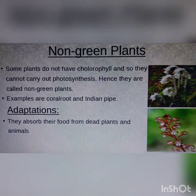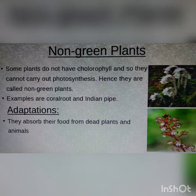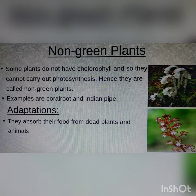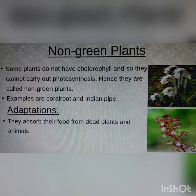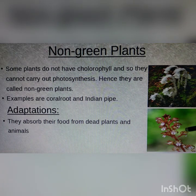Now moving on to non-green plants. These plants are not green in color because they lack chlorophyll, which gives plants their green color. Without chlorophyll, photosynthesis cannot take place. Examples are the Indian pipe and coral root. They absorb their food from dead plants and animals — the Indian pipe is white in color and the coral root is red in color. They take their nutrition from dead organic matter.